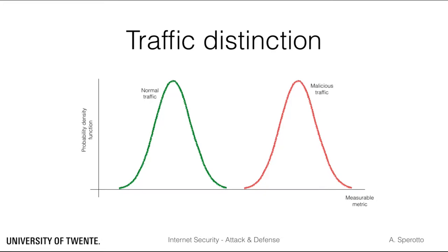This means that the metric is able to fully separate the benign and malicious traffic. It also means, most likely, that we are dealing with an easy problem. But let's go on with this example. In this case we are able to build a perfect IDS by properly choosing a threshold for our metric. Every sample with a metric larger than the threshold is an attack, and every sample with a metric smaller than the threshold is normal traffic.